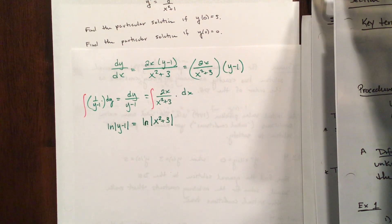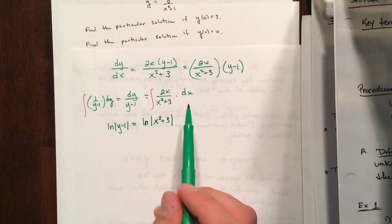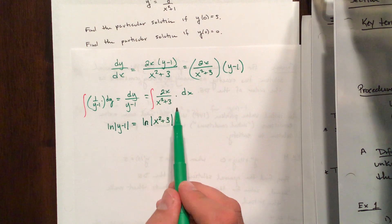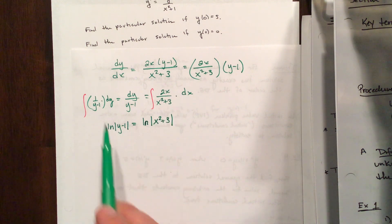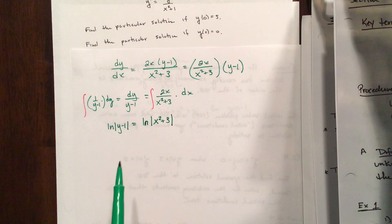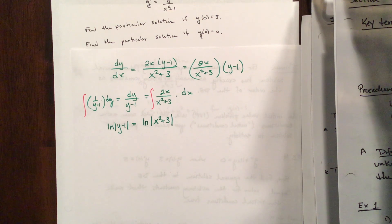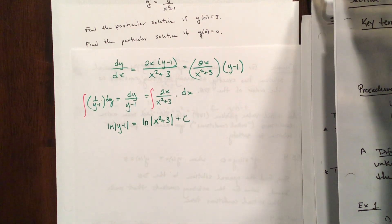Integrating both sides, we recognize natural log integrals. The left side gives the natural log of the absolute value of y minus 1. The right side gives the natural log of the absolute value of x squared plus 3, because the derivative of the denominator (2x) is present in the numerator. Plus c on the independent variable side.